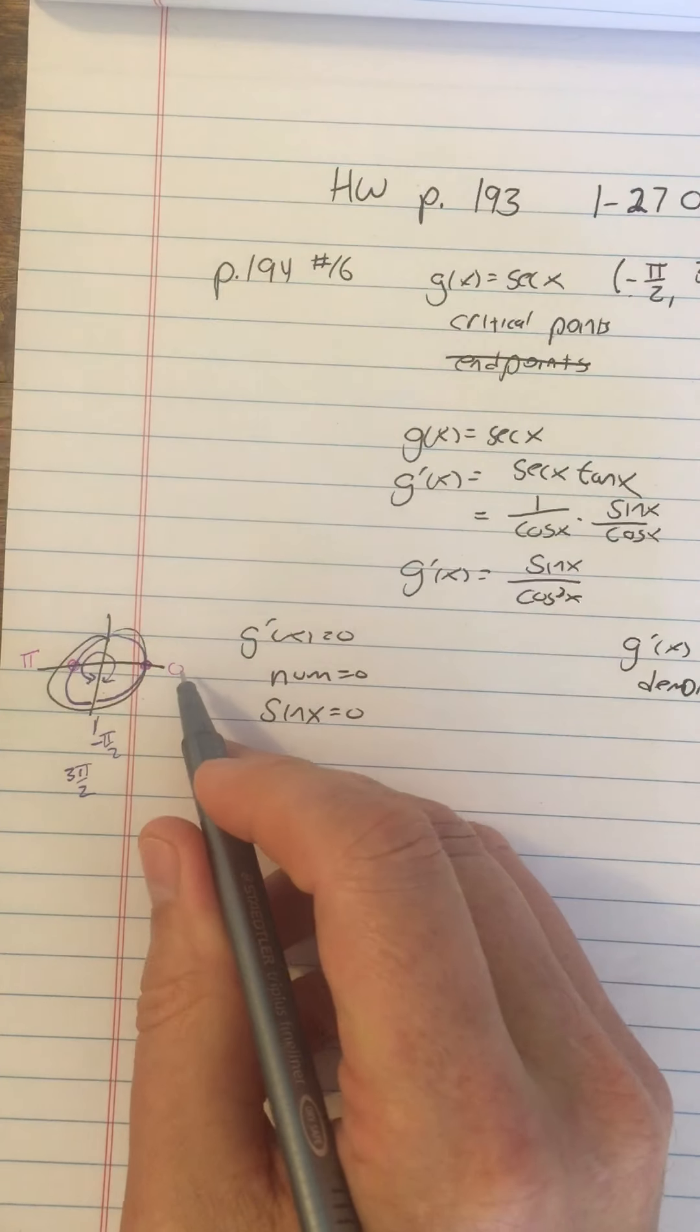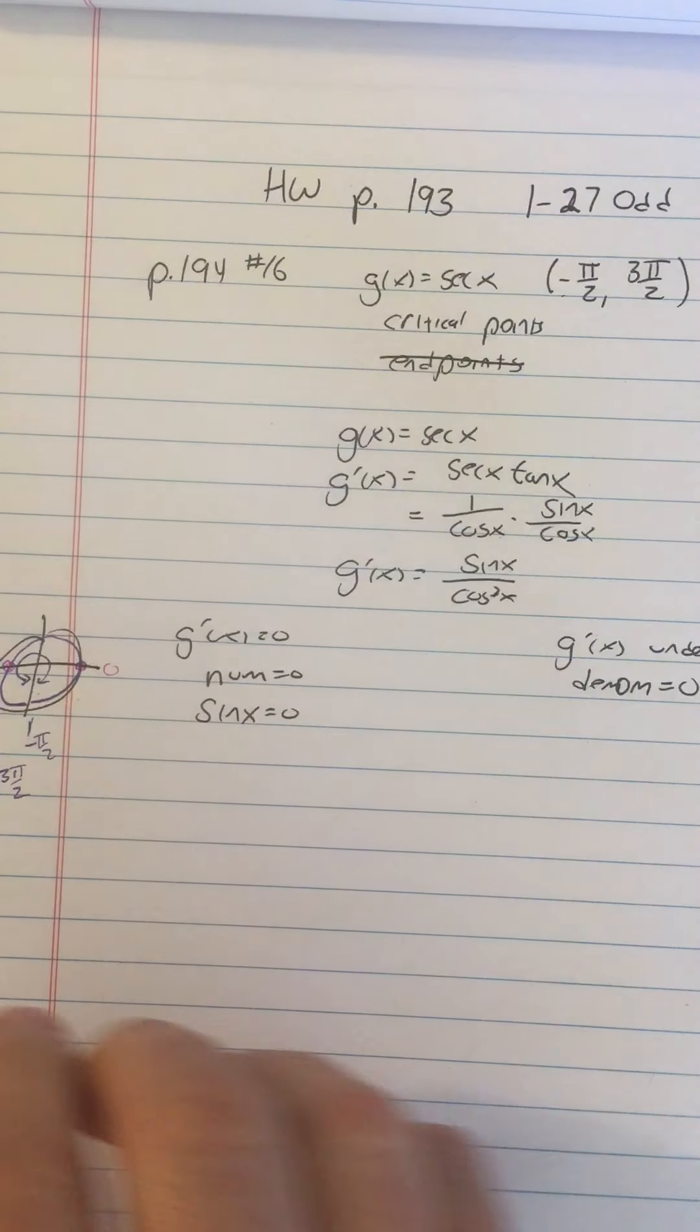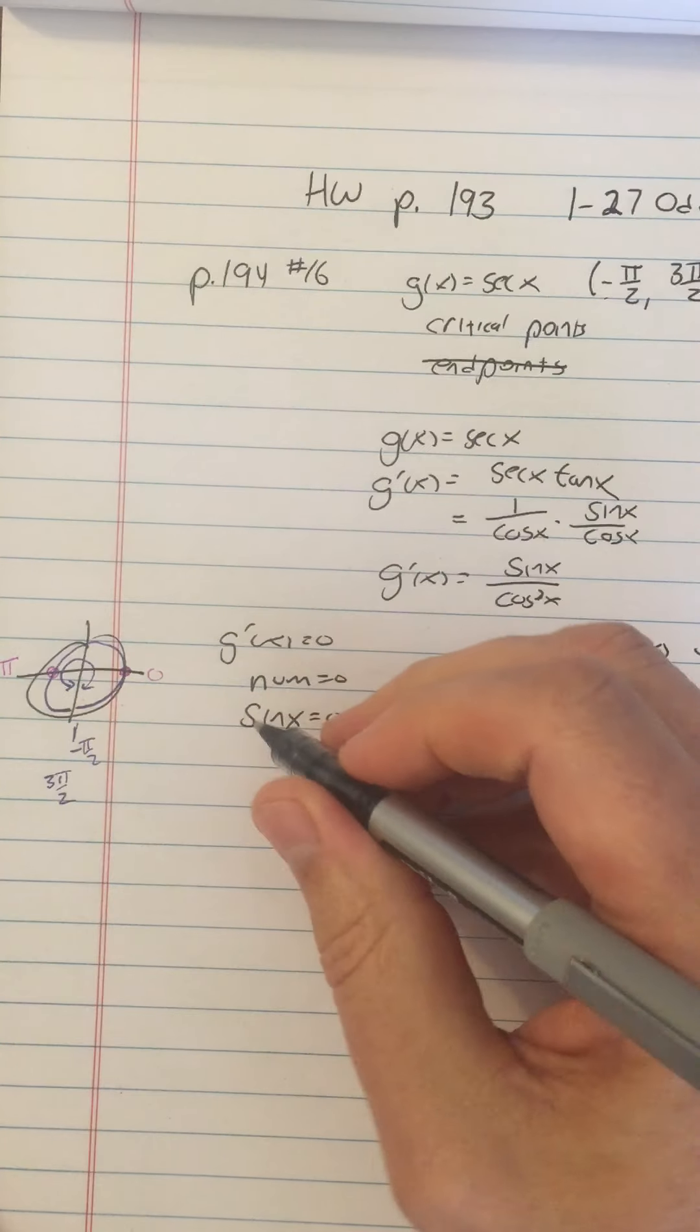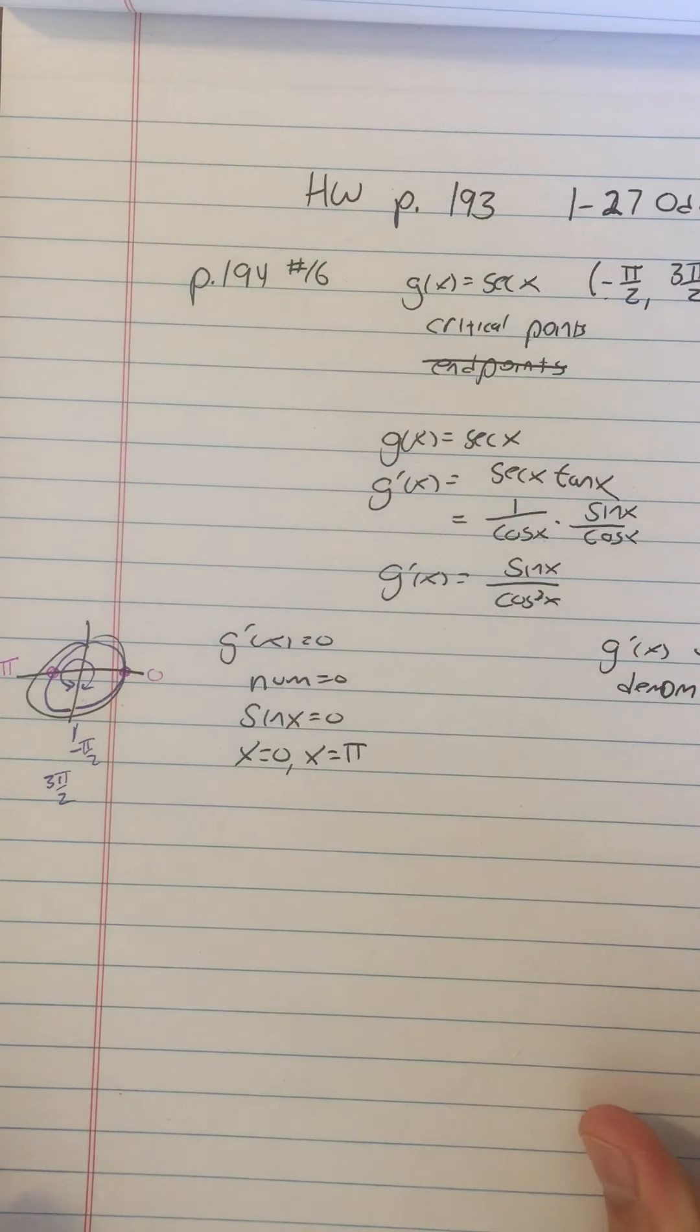We're not going to call this 2 pi because that would be more than 3 pi over 2. It would not be in this interval. So that means this has two solutions: x equals zero and x equals pi.